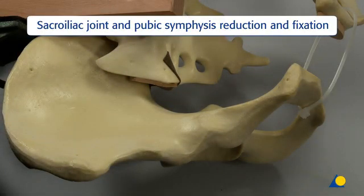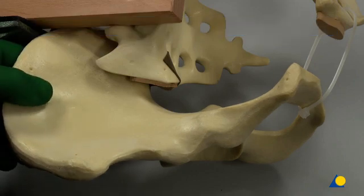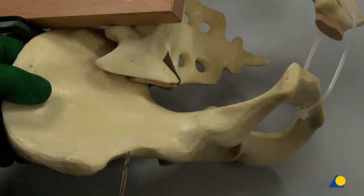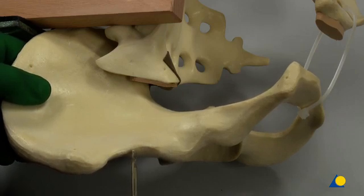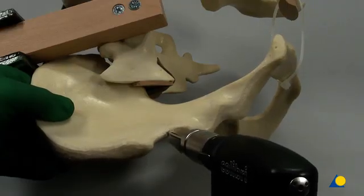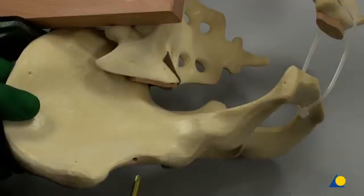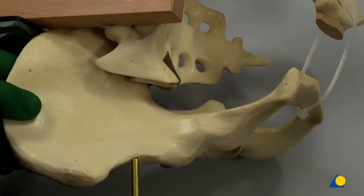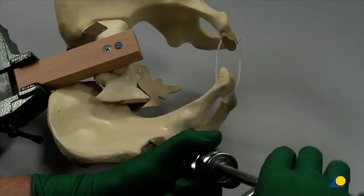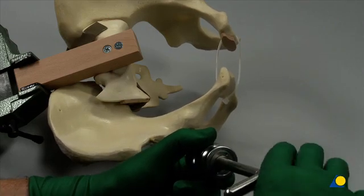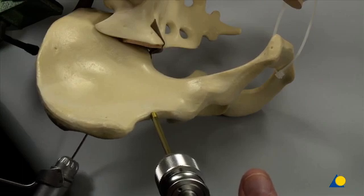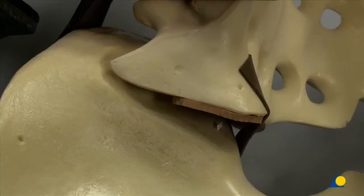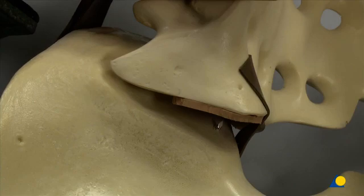Sacroiliac joint and pubic symphysis reduction and fixation will now be shown. Make a 3.5 mm hole with the entry point at the level of the interspinous notch directed toward the roof of the greater sciatic notch and into the sciatic buttress. Insert a shunt's screw by hand, not by machine, so that the opposite cortex may be felt when it is reached. Insert a transcutaneous 2.0 or 2.5 mm K-wire for temporary fixation. The tip of the K-wire is visible inside the sacroiliac joint. Make sure the K-wire is not so long that it hinders correct reduction of the joint later.